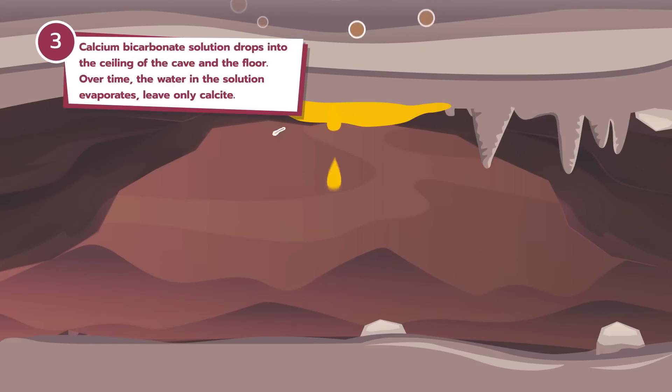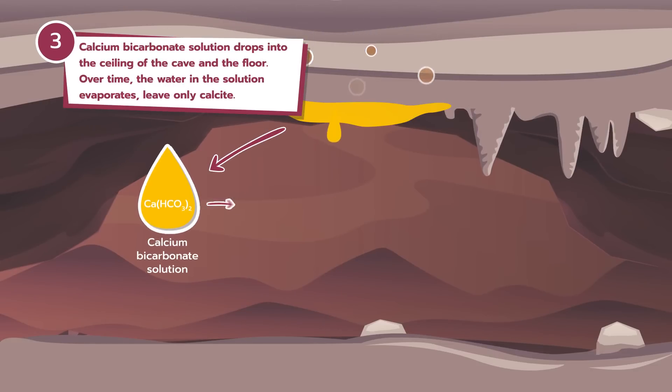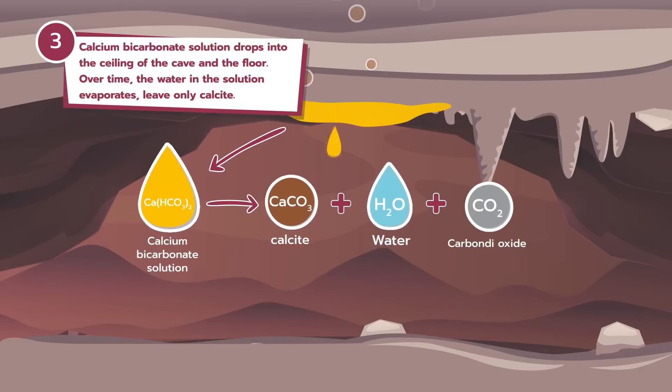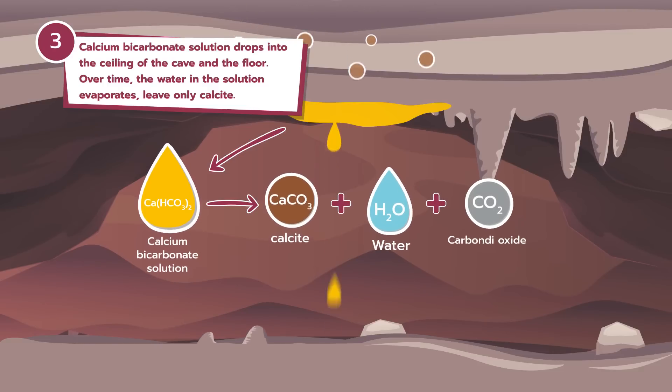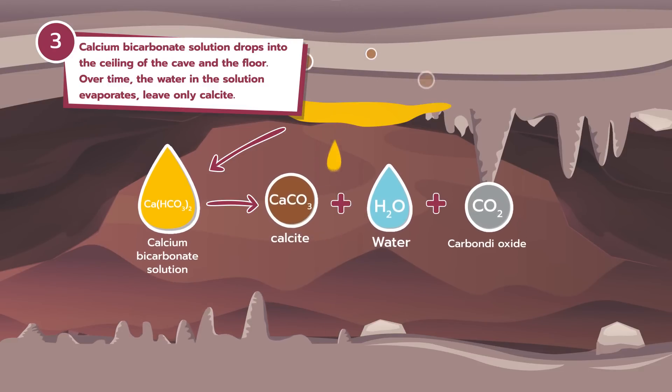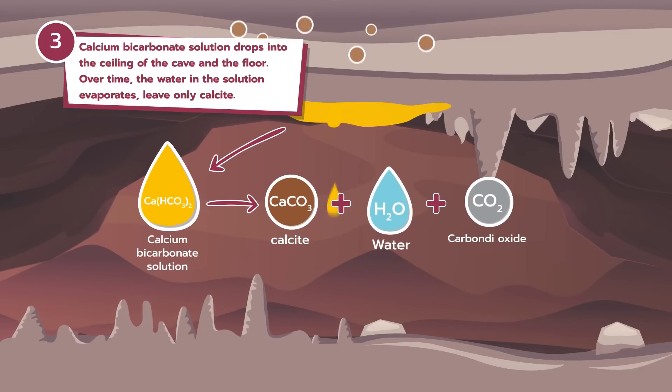The calcium bicarbonate solution drips onto the ceiling of the cave and the floor. Over time, the water in the solution evaporates, leaving only calcite.